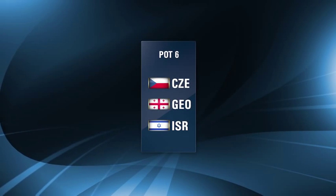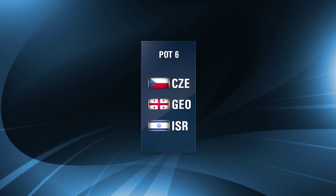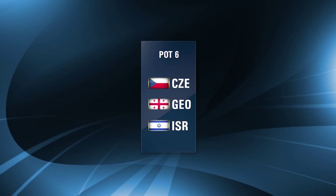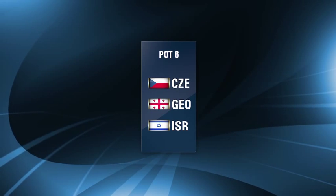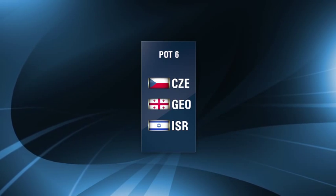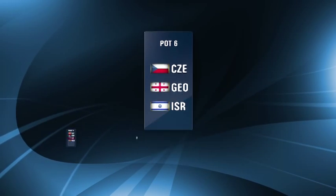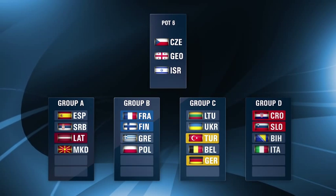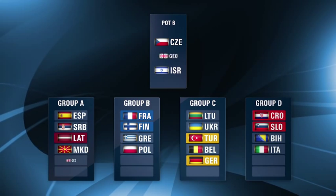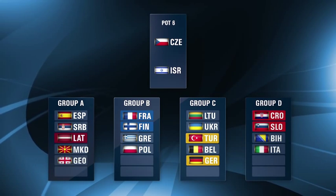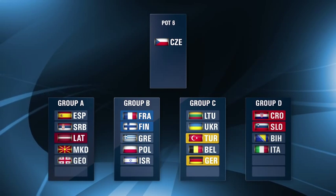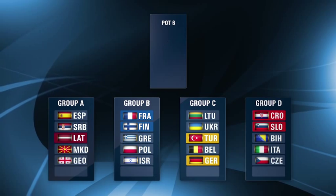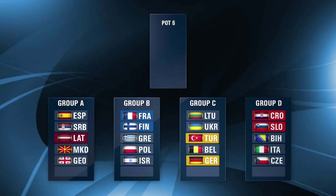Pot 6 is a straight draw with the three teams going to Groups A, B and D as Germany has already been selected in Group C. For example, Georgia is drawn first and goes to Group A, Israel to Group B and finally the Czech Republic to Group D.